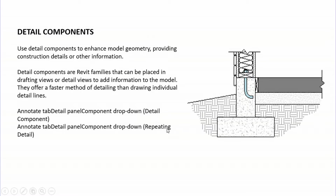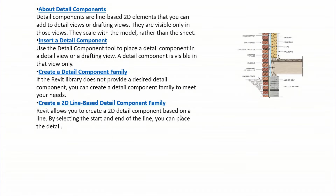We've seen these two terms — Detail Component and Repeating Detail Components — in our dropdown. If you want to add any detail to your view, such as a section of a foundation or building, you can add view-specific detail components from Revit libraries or create your own. Detail components are visible only in those views — so if you're working in sectional views, they will only be visible there, not in 3D or floor plan views.